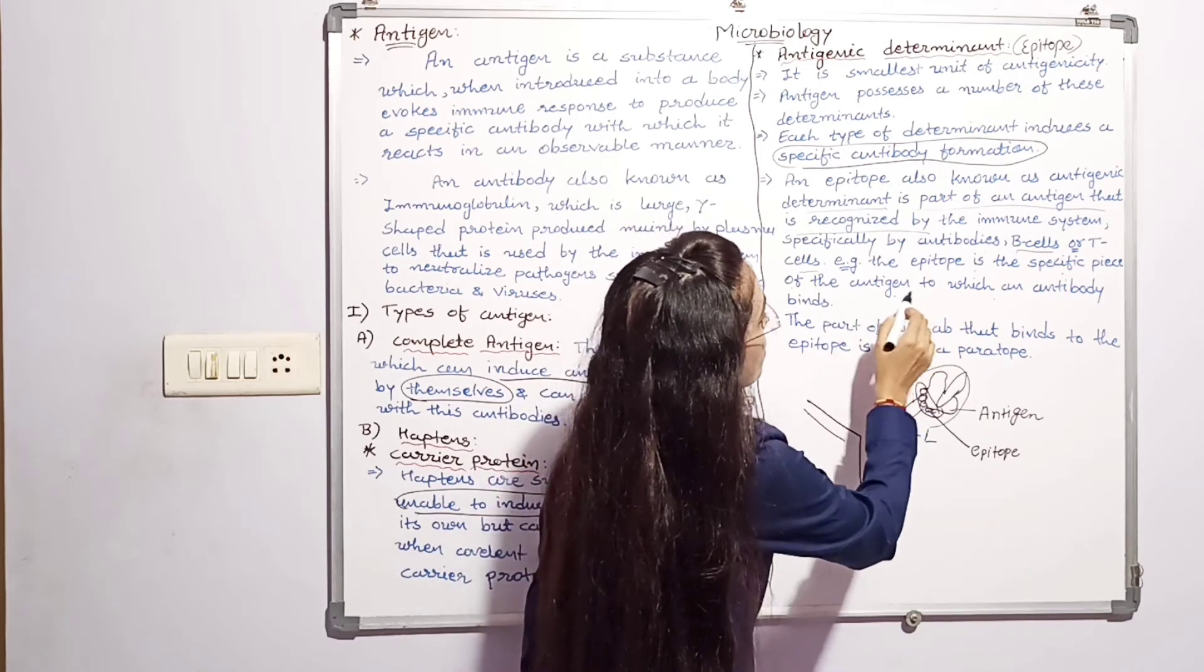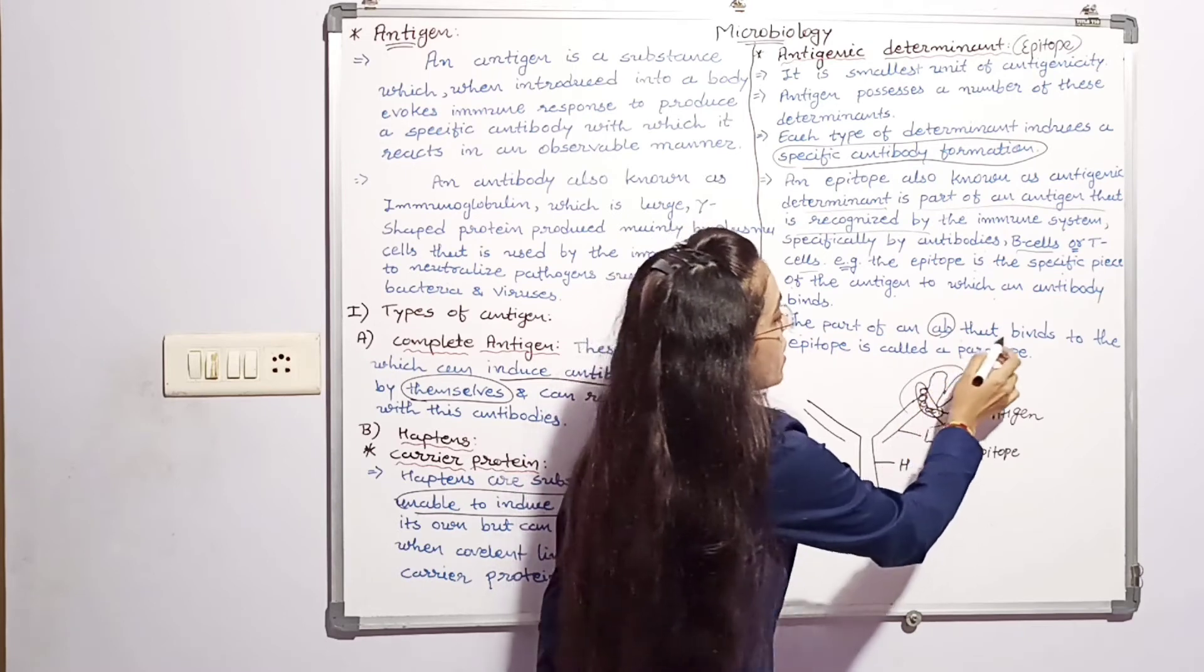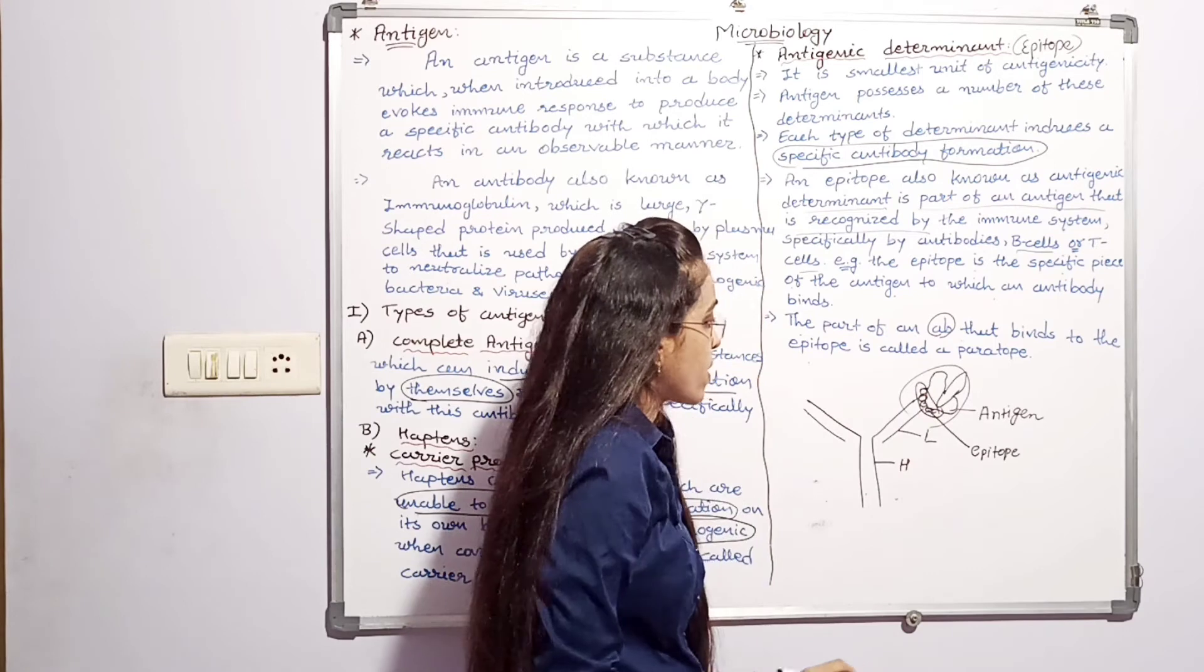The part of an antibody that binds to the epitope is called a paratope.